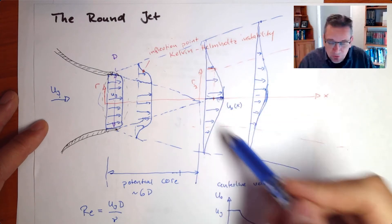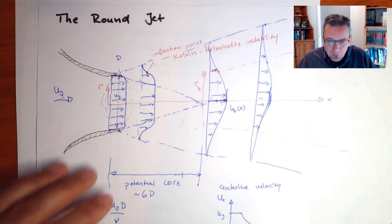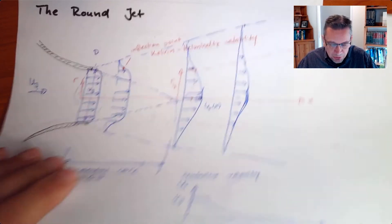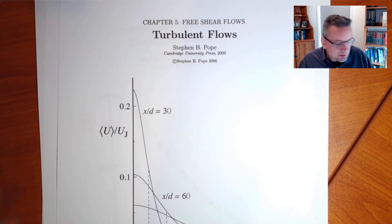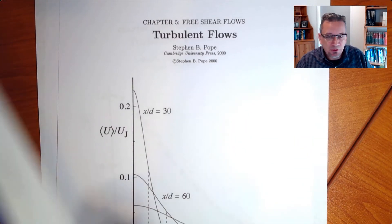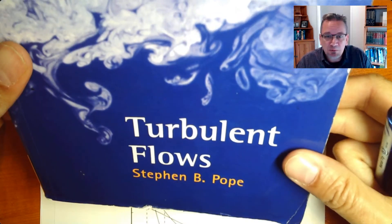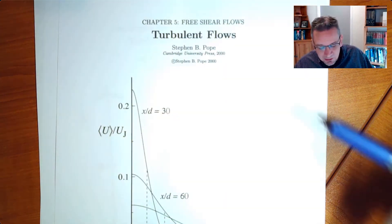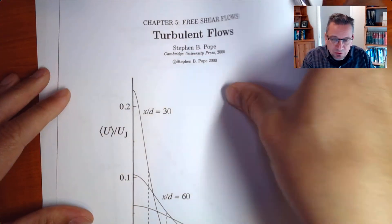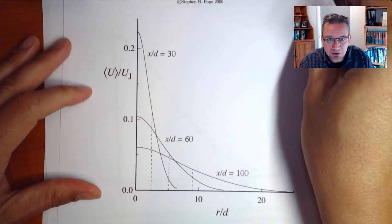If you measure now the velocity profiles over here, first I want to show you now some actual data and this data is actually coming here from this book, from Stephen Pope Turbulent Flows, and this one actually shows some nice data over here.